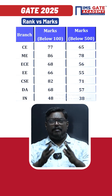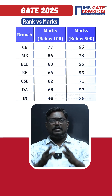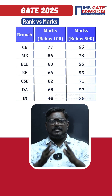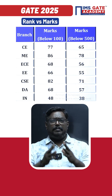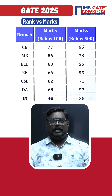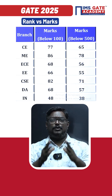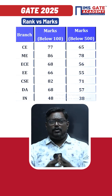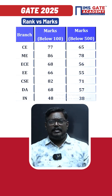And 56 marks for below 500. Similarly for electrical engineering, 66 marks for below 100 and 55 marks for below 500. For CS, if you want to secure a rank below 100 it should be around 82, and for below 500 it is 71.